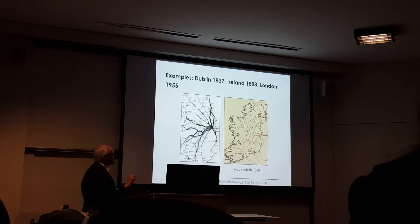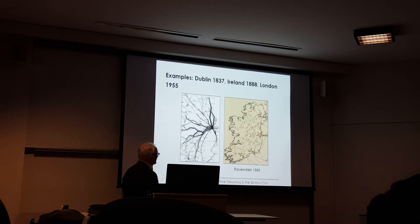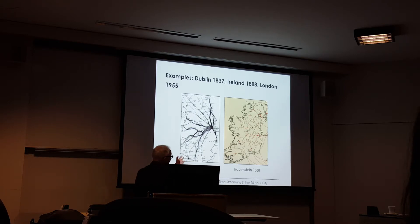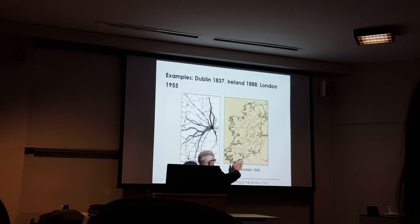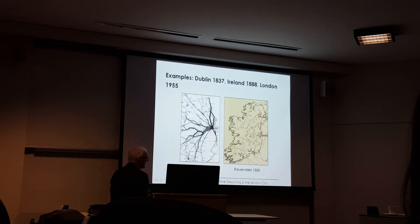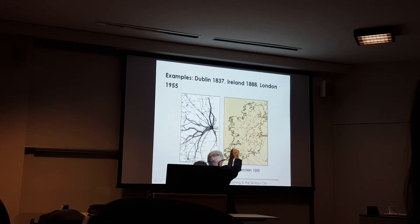The British government was thinking about building a railway in Ireland, and they did what we do today — they went out and counted traffic to see whether there was any kind of rationale for a railway. And you can see how one location, Dublin and the locations around it, can expand to being a lot bigger in this sense. This is taken from the 1881 census. Ravenstein wrote some papers on laws of migration, and this is his way of representing — the whole map is for the British Isles — his flow map, his vector flows.